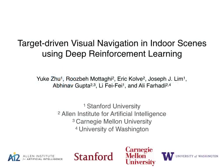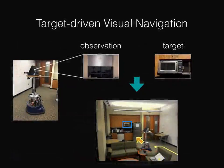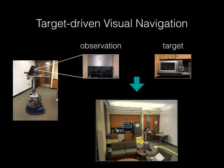In this video we introduce our work: target-driven visual navigation in indoor scenes using deep reinforcement learning. We develop a deep reinforcement learning algorithm based only on visual input to navigate in a space and find a given target.